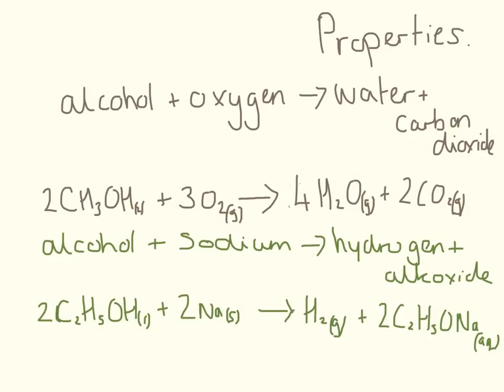You need to know some of the uses and properties of alcohols. If we burn an alcohol, like an ethanol burner, alcohol burning completely in oxygen is going to produce water and carbon dioxide. Here is an example balanced equation for you with state symbols. Moving on in our GCSE we are always going to need to put state symbols here.